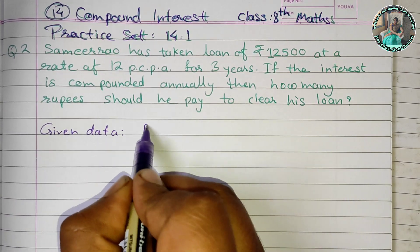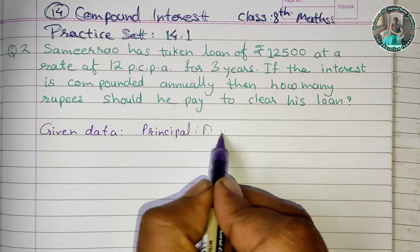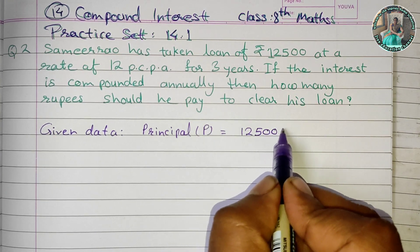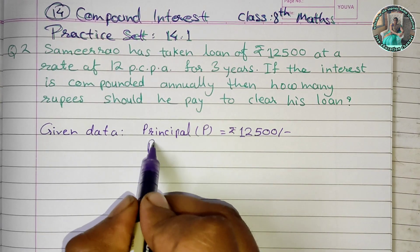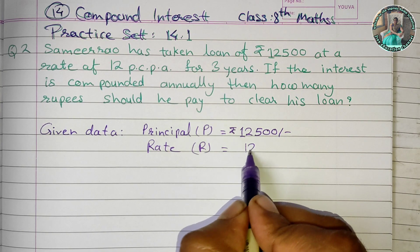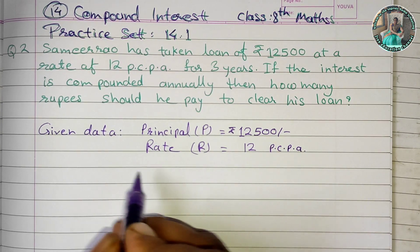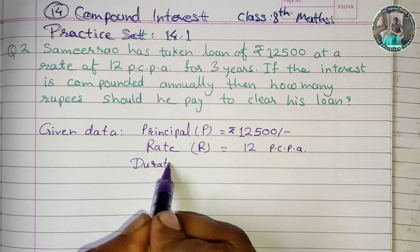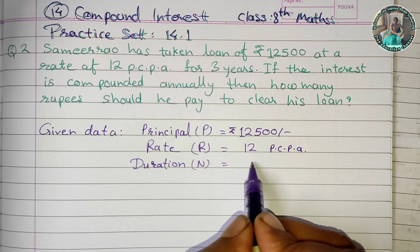Principal — P indicates the principal amount. The principal P is Rs. 12,500. Rate — R indicates the rate, which is 12% per annum (P.A.). Duration — N indicates the number of years, which is 3 years.